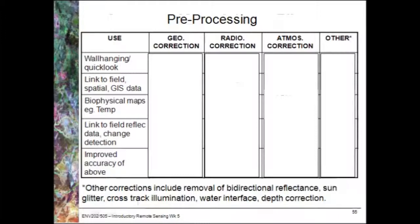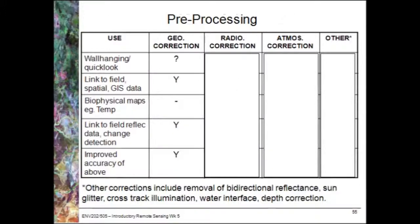Let's have a look first of all at the geometric correction column. For a wall hanging or a quick look, would we need to perform geometric correction? It actually depends on the distortions in the image initially, so you may or may not need to do it. The idea is don't do work that you don't need to do — perform what needs to be done just for the purpose of what you're doing. If you need to link to spatial data, however, then geometric correction is obviously necessary to get the coordinate information into your maps.